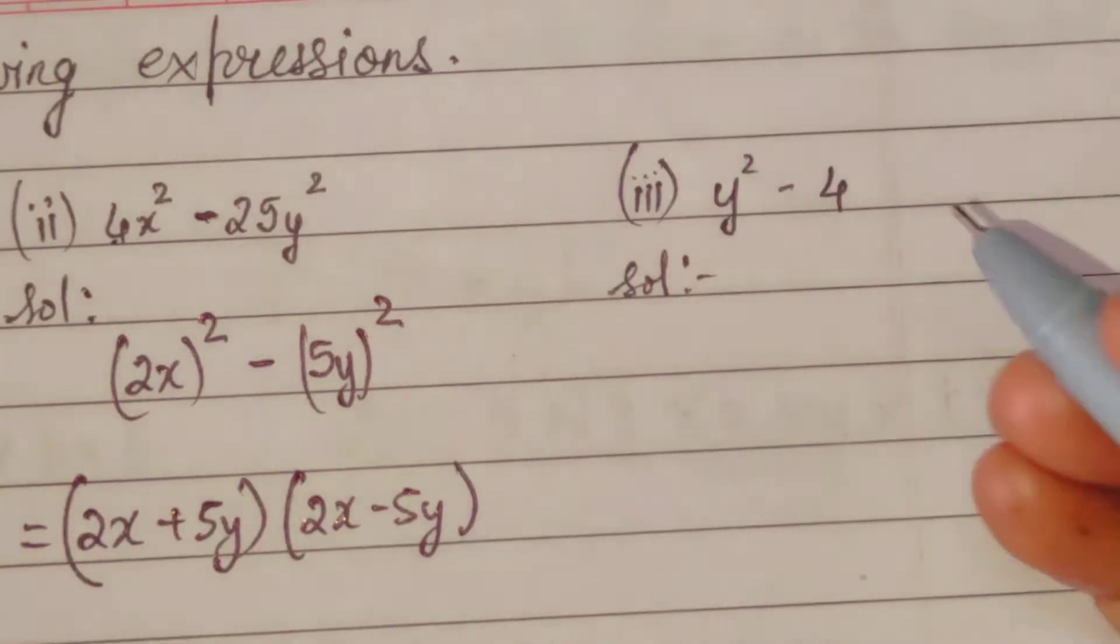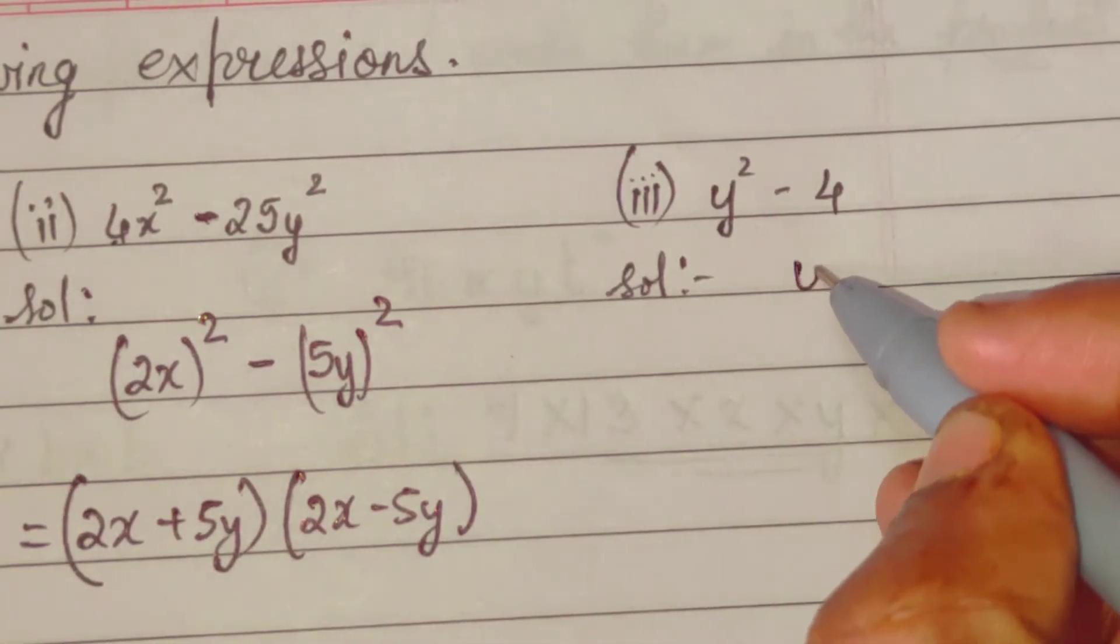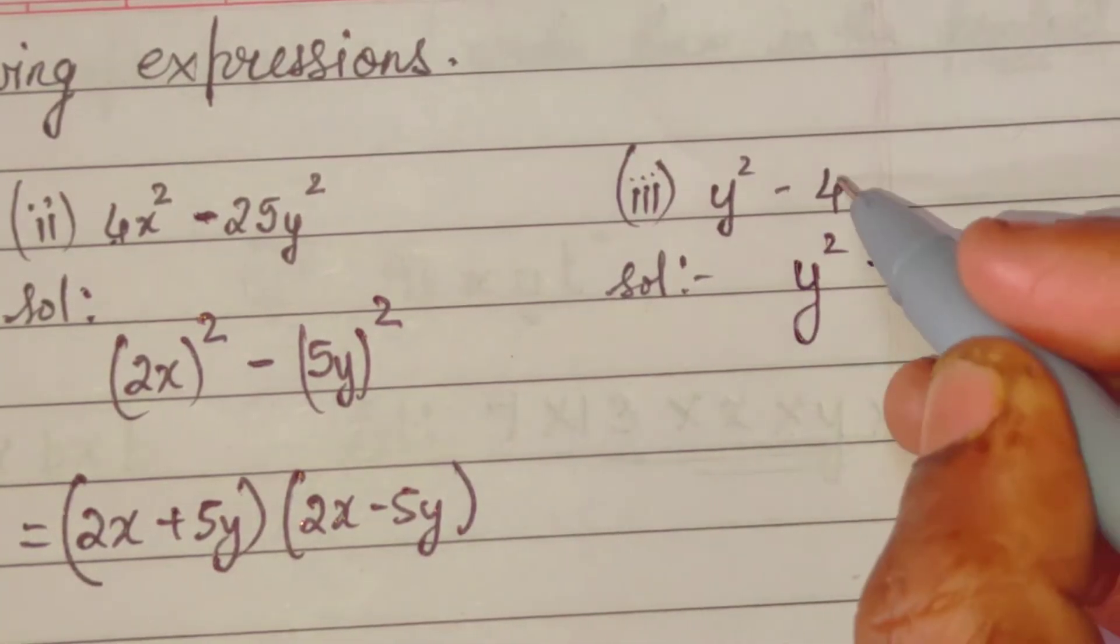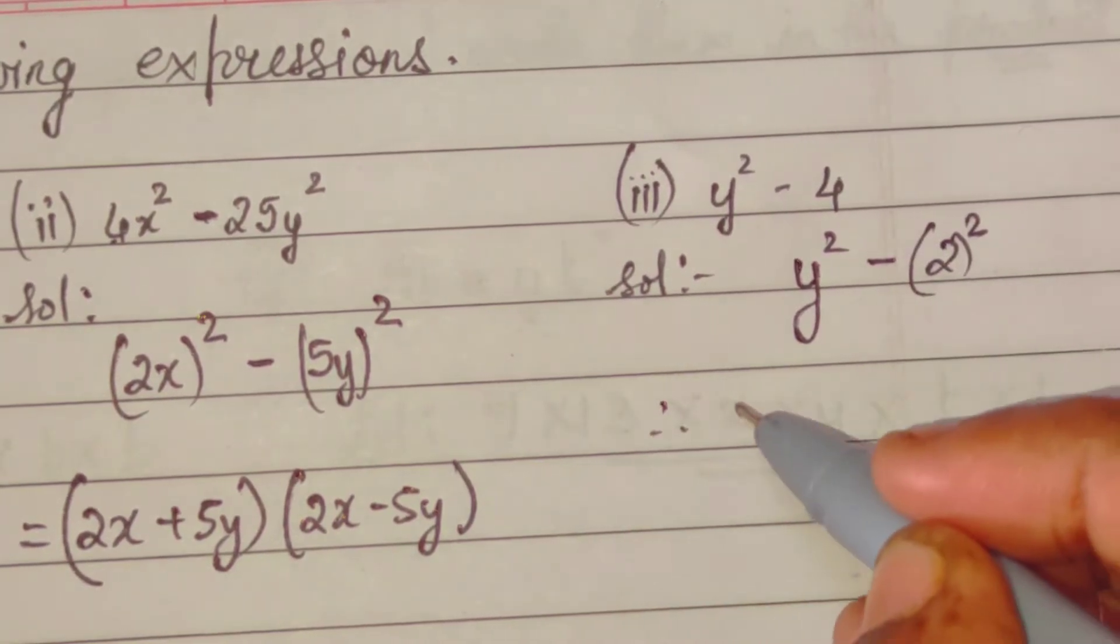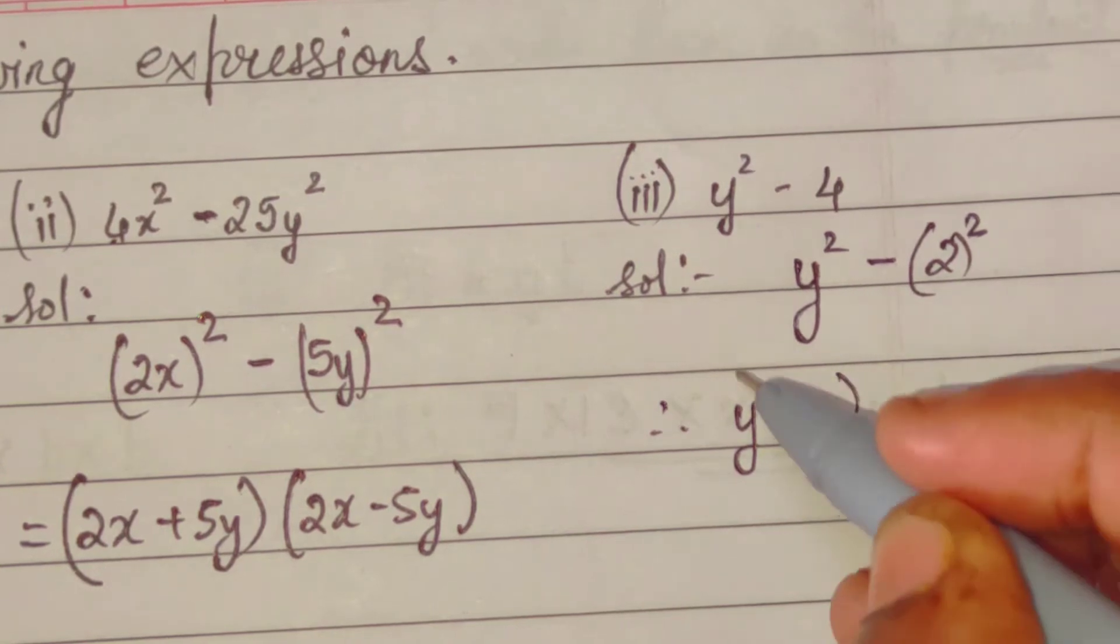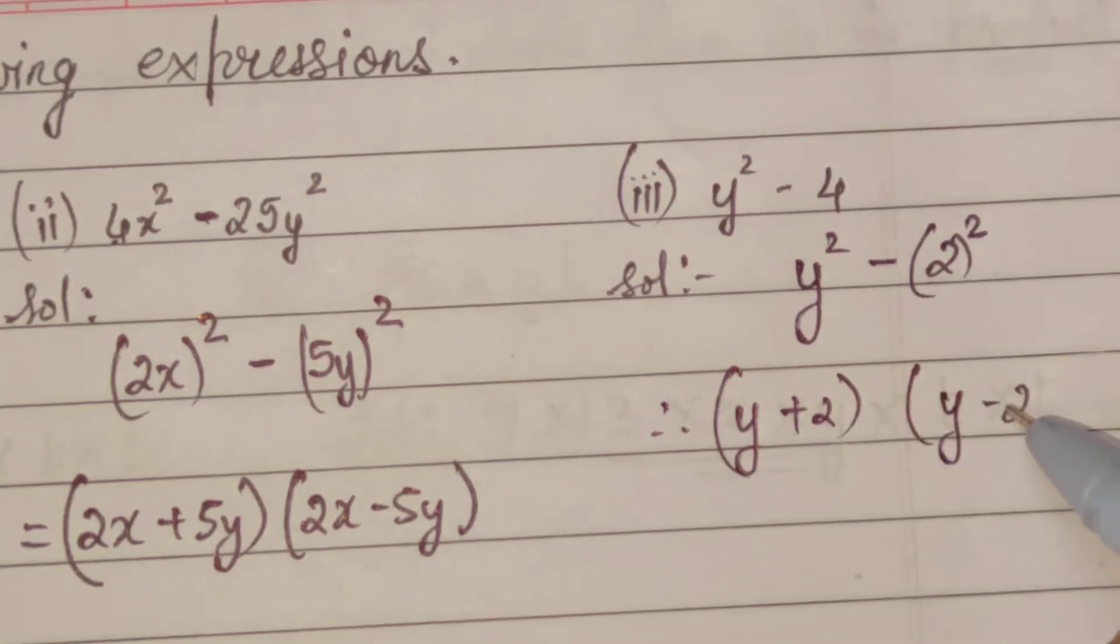Third one. y square minus 4, which is square of 2. So your answer will be y plus 2 times y minus 2.